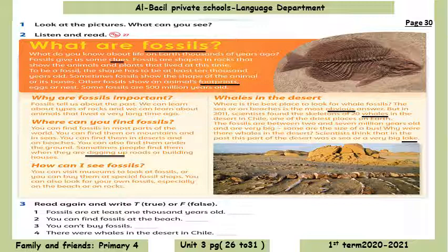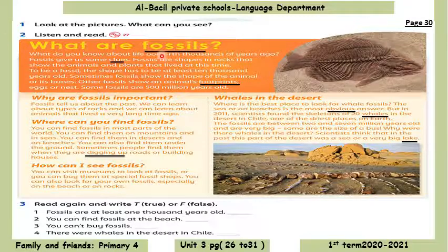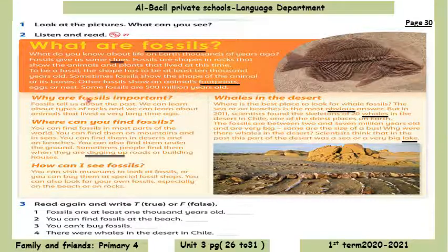What are fossils? What do you know about life on Earth thousands of years ago? Fossils give us some clues. Fossils are shapes in rocks that show the animals and plants that lived at this time. To be a fossil, the shape has to be at least 10,000 years old. Sometimes fossils show the shape of the animal or its bones.